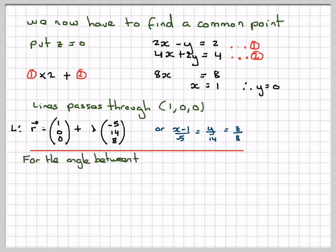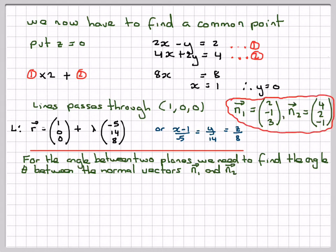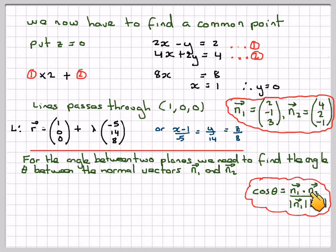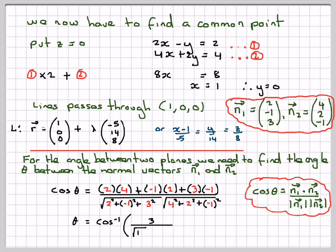For the angle, we need to find angle theta between the two normals, which gives the angle between the two planes. We use cos theta equals n1 dot n2 divided by the magnitude of n1 times the magnitude of n2. So cos theta equals (2)(4) plus (-1)(2) plus (3)(-1), all over the square root of (4 + 1 + 9) times the square root of (16 + 4 + 1), giving cos theta equals 3 over root 14 times root 21. Therefore theta equals 79.9 degrees.